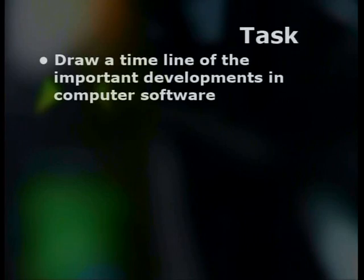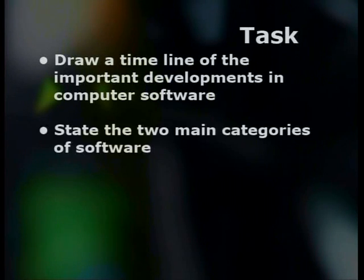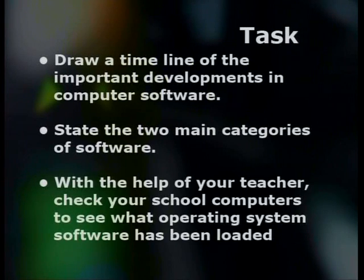As you have seen, computers have come a long way since Ada Lovelace wrote the first program in 1833, and they are destined for even bigger developments in the future. Here are your tasks: draw a timeline of the important developments in computer software; state the two main categories of software; and with the help of your teacher, check your school computers to see what operating system software has been loaded. Thank you for joining us for our first lesson on software.